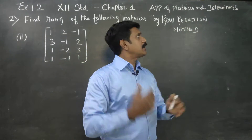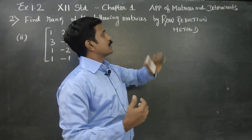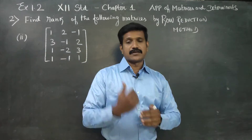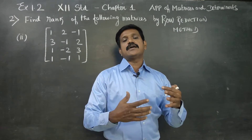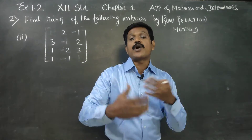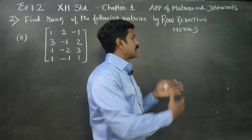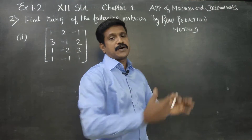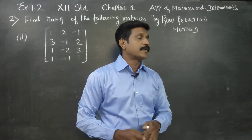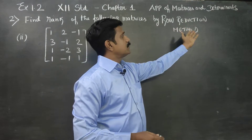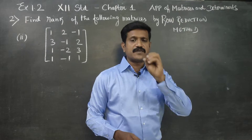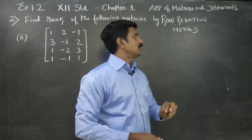Actually, rank by the minor method requires a lot of work and a lot of steps. But in the row reduction method, it is a very easy method.